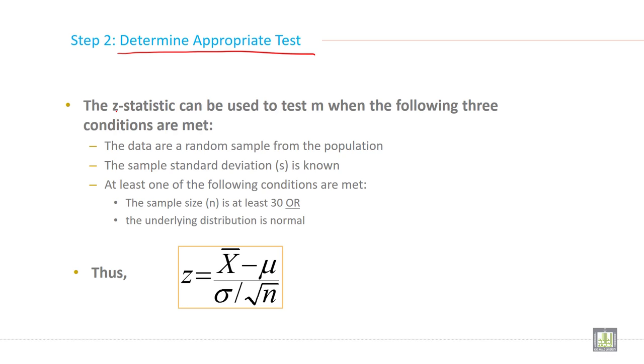The Z-statistic can be used to test mean when the following three conditions are met. The data are a random sample from the population. This is an important criteria. And the sample standard deviation is known.